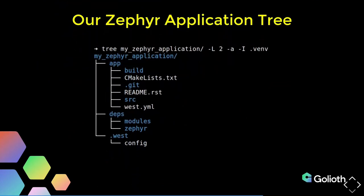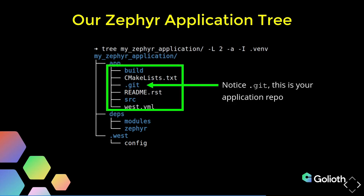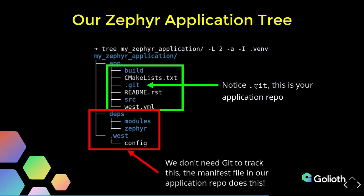Our final tree is going to look like this: the application folder is 'my_zephyr_application', but the actual code from the repository tracked on GitHub is in the apps folder — you can see the .git file there. This is why you use west init and not git clone, because git clone would have put all those files into the my_zephyr_application folder and wouldn't have set up a path to that configuration file. The .west folder and the deps folder are not actually in our repository — those get pulled in by the West tool after we use west init to pull from our repository.